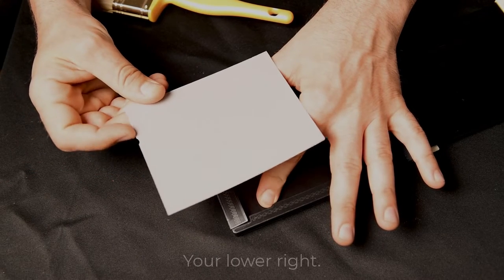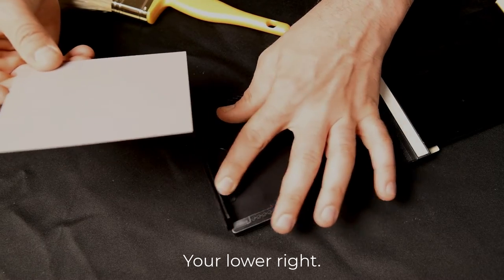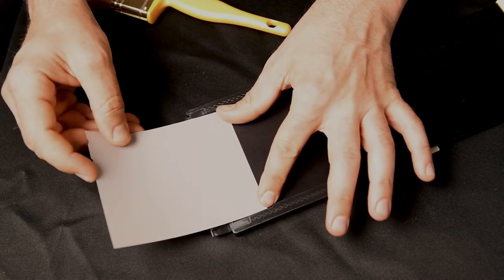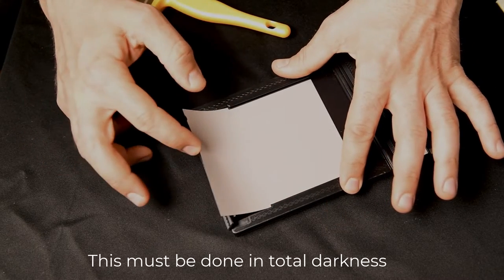When the notches are on the lower right, the emulsion is facing out. Of course, loading film has to be done in total darkness. This is just a demonstration. That piece of film is ruined.